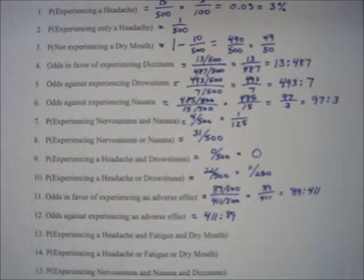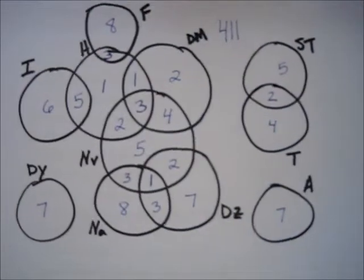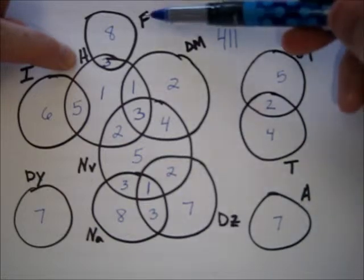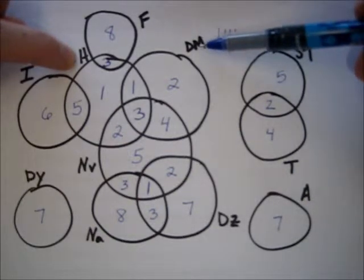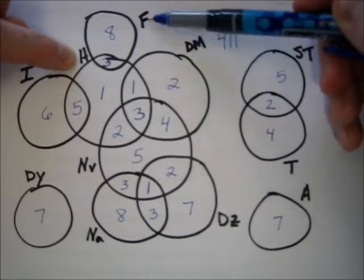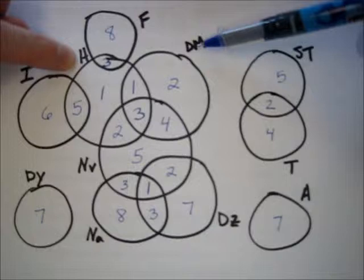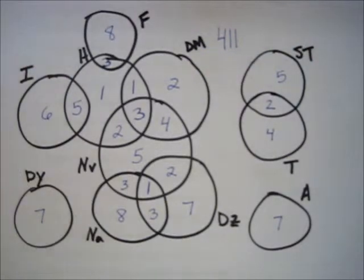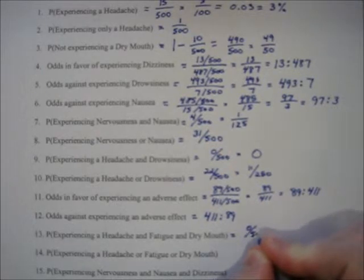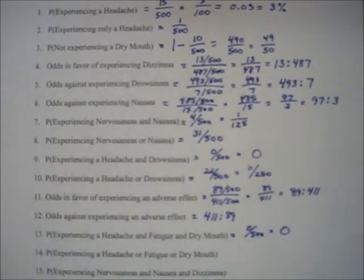Problem 13: probability of experiencing a headache and fatigue and dry mouth. Looking for a triple intersection of those three — it doesn't happen. You've got fatigue and headache, and dry mouth and headache, but there's no overlap between dry mouth and fatigue. So according to past results, it has not happened — probability is 0 out of 500, or just 0.